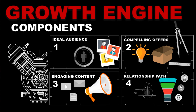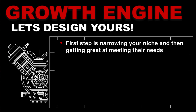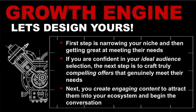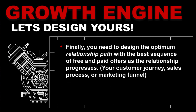We went through all four components: your ideal audience, compelling offers, engaging content, and relationship path. Here's a quick recap. First, narrow your niche and get great at meeting their needs. Once confident in your ideal audience, craft truly compelling offers that genuinely meet their needs. Next, create engaging content to attract them into your ecosystem and begin the relationship. Finally, design the optimum relationship path with the best sequence of free and paid offers as the relationship progresses.